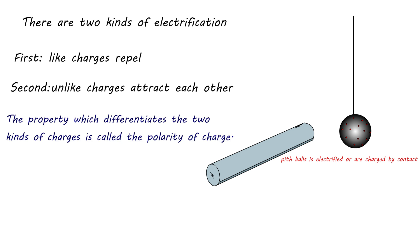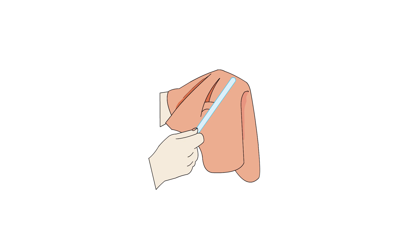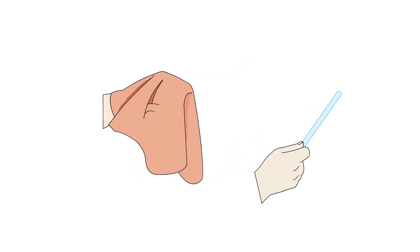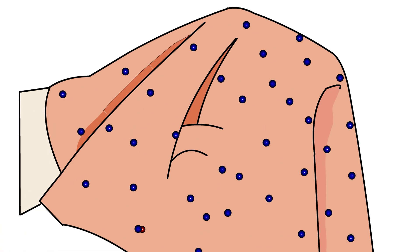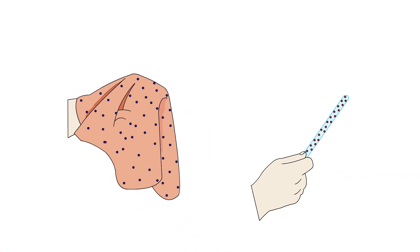The property which differentiates the two kinds of charges is called the polarity of charge. When a glass rod is rubbed with silk, the rod acquires one kind of charge and the silk acquires the second kind of charge. This is true for any pair of objects that are rubbed to be electrified.